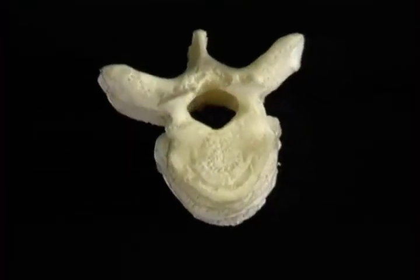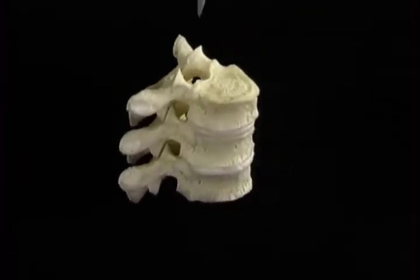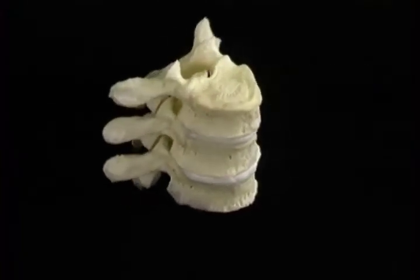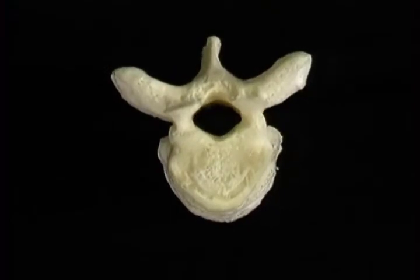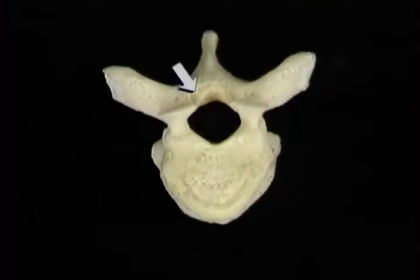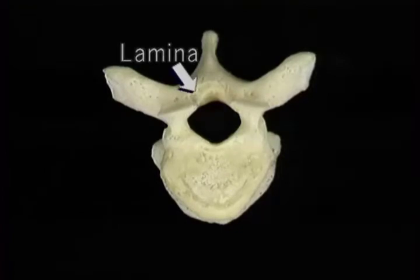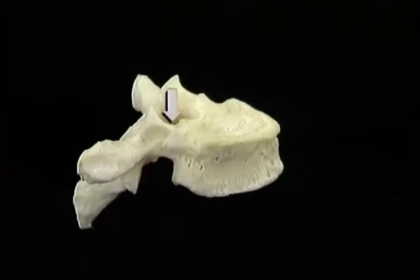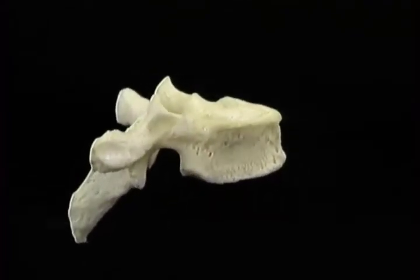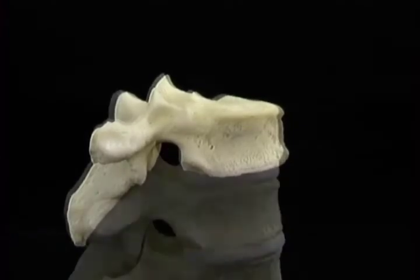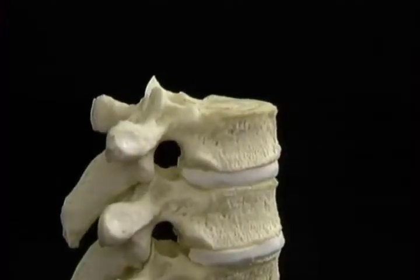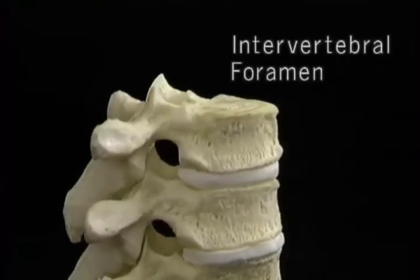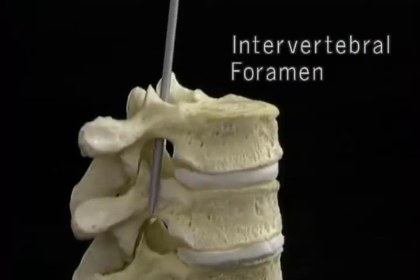The series of vertebral foramina create the tubular space that contains the spinal cord, called the vertebral canal. This part of the neural arch is called the lamina; this part is the pedicle. There's a small notch in the upper edge of the pedicle and a larger notch in the lower edge. Together, the notches above and below form an opening on each side called the intervertebral foramen. A spinal nerve emerges through each intervertebral foramen.